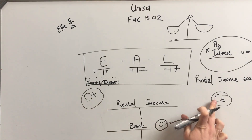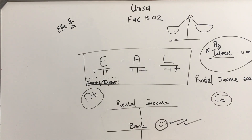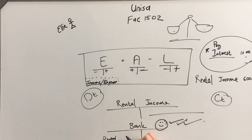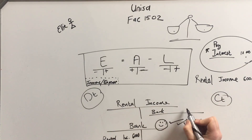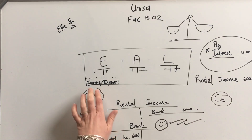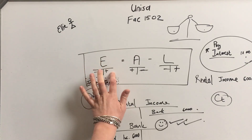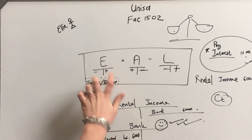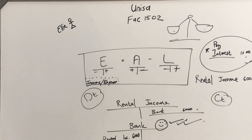Are we going to debit or credit bank? We're getting rental income — money coming in — so our bank balance goes up, which means we debit bank on the left side. That means rental income goes on the right side. So bank's debit side: 'rental income — 6,000,' and rental income's credit side: 'bank — 6,000.' Income makes equity go up — great.